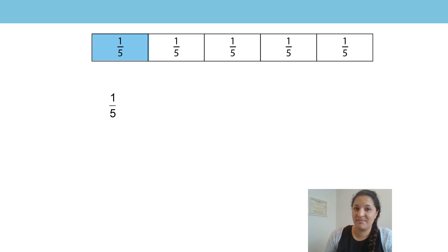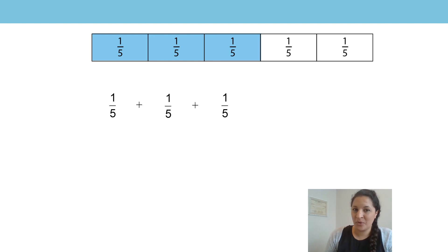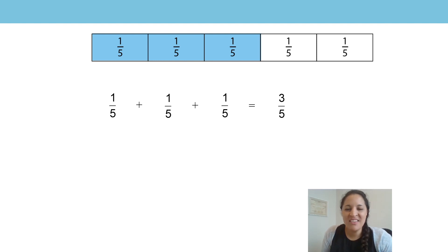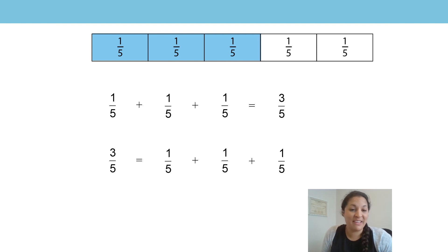One fifth and another one fifth and another one fifth equals three fifths. There is another way that I can write this equation: three fifths equals one fifth and another one fifth and another one fifth.